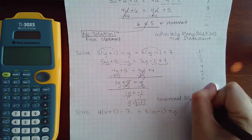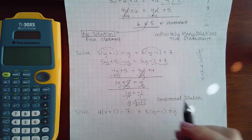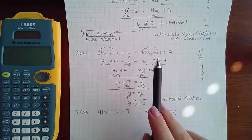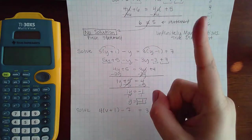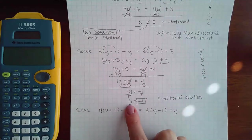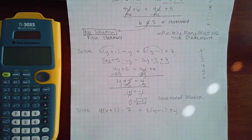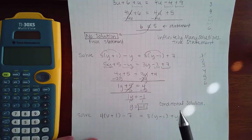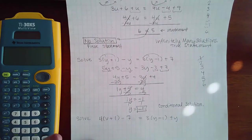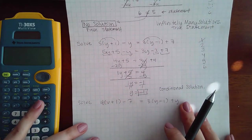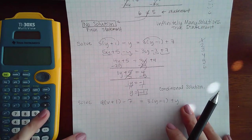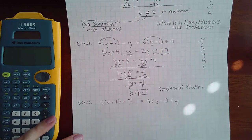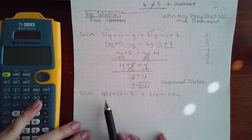So this is what they call a conditional solution. It means that this equation is only true under one condition, and that condition is that y is equivalent to negative 1. Whereas here there's no solution at all, here there is one but it's very specific. And then the other one is when you have infinitely many solutions.